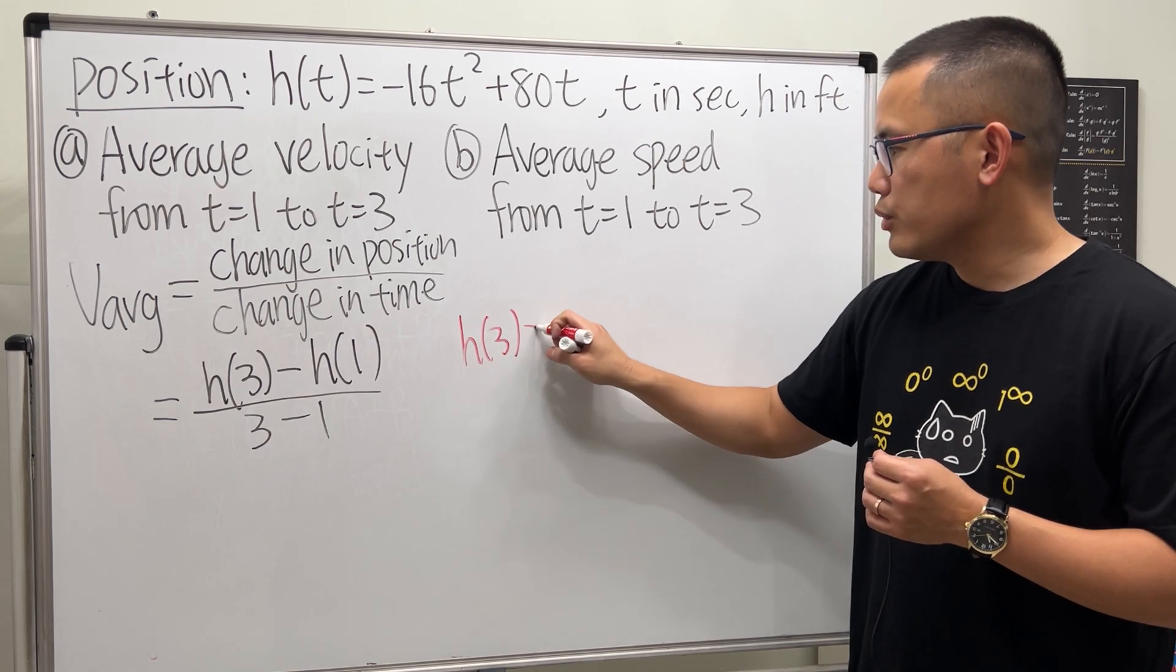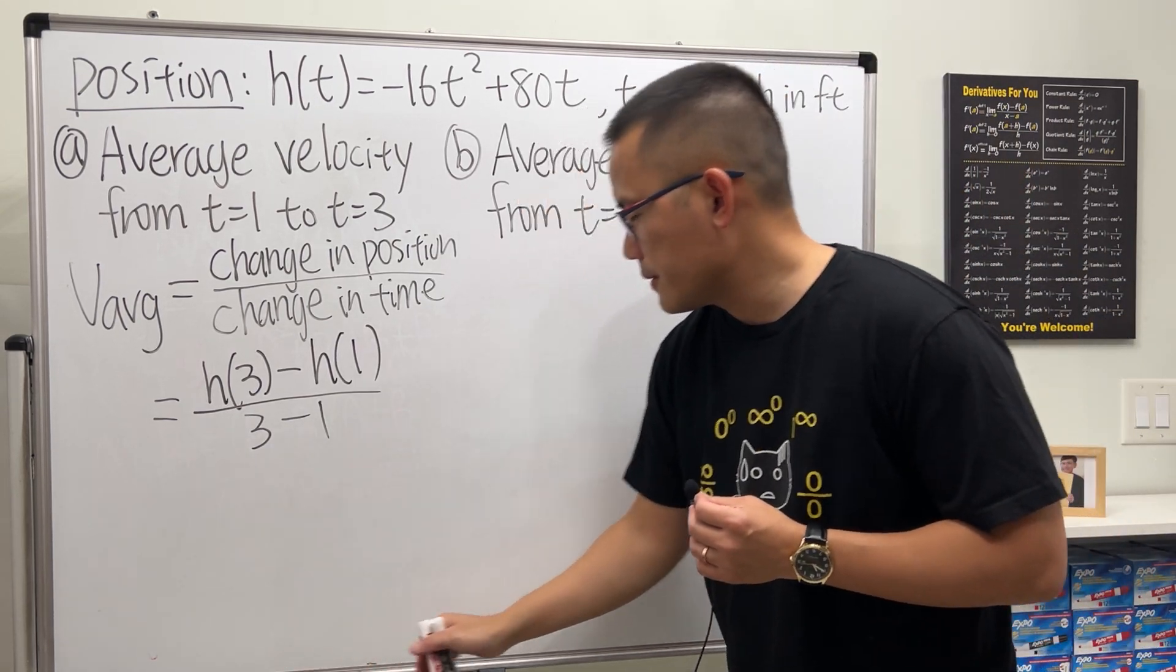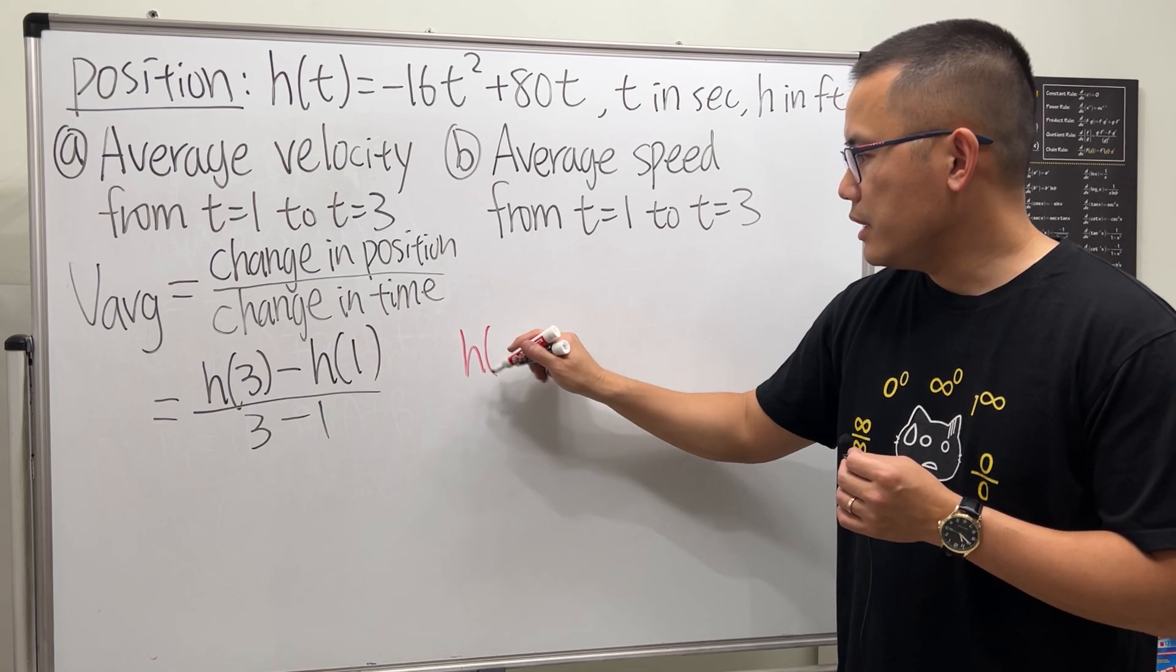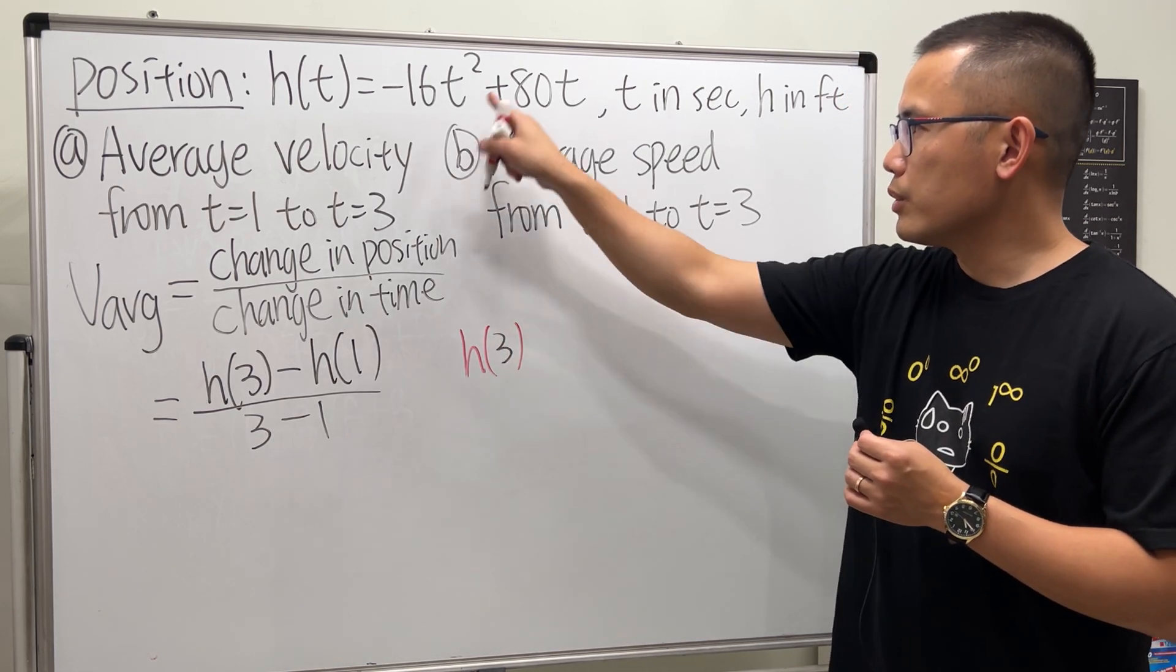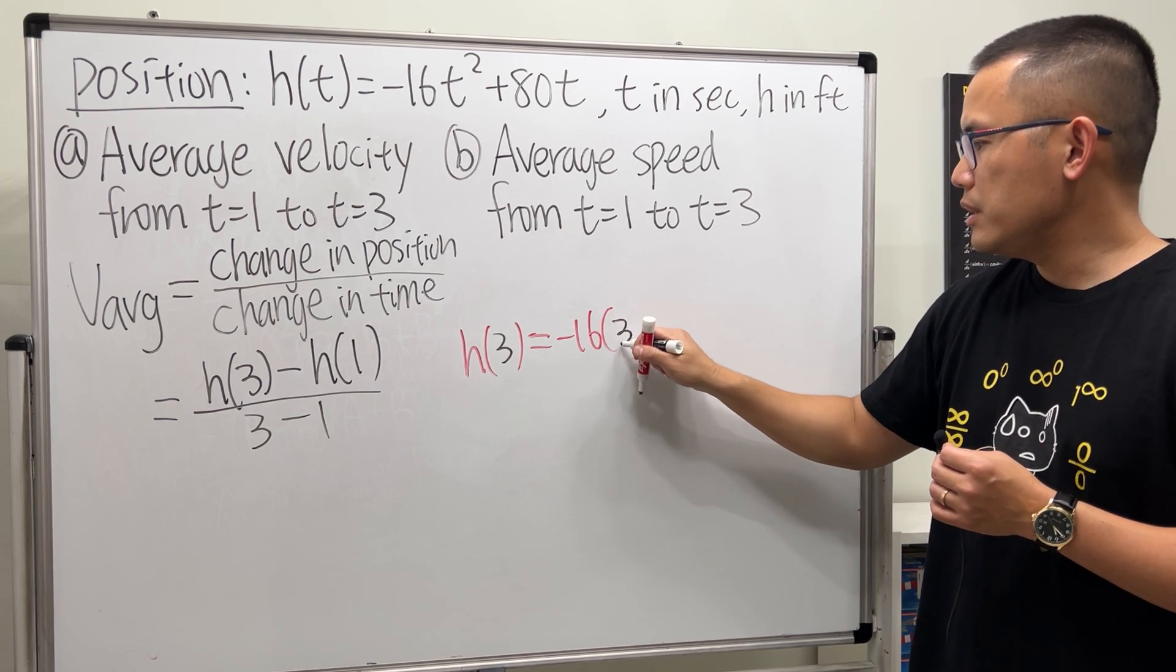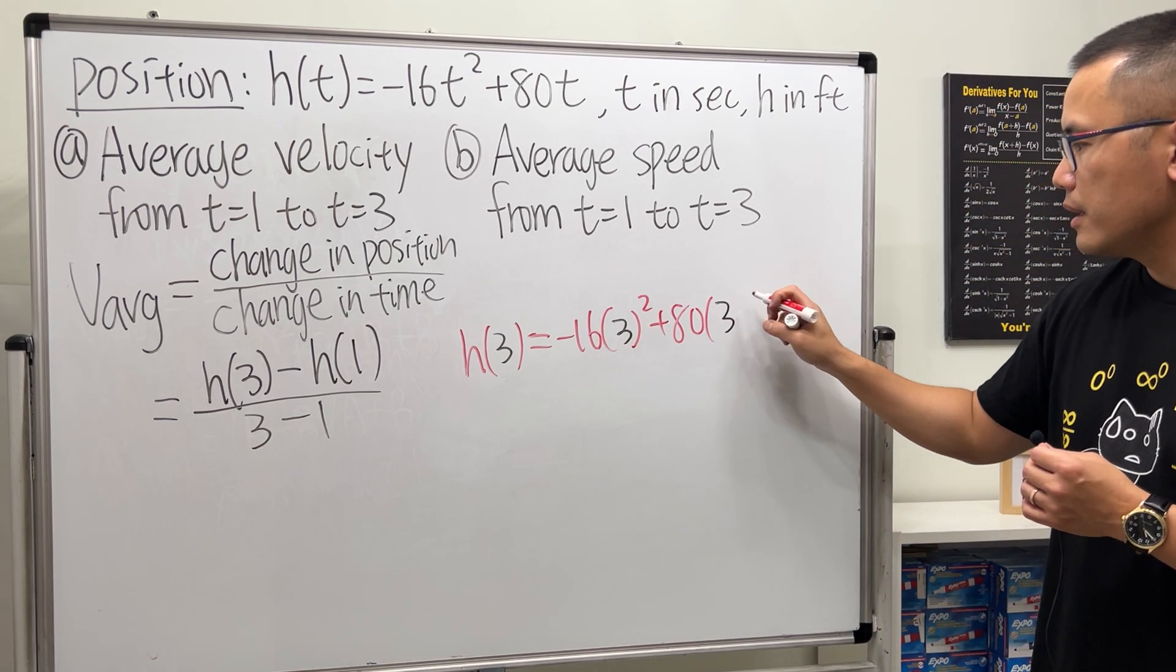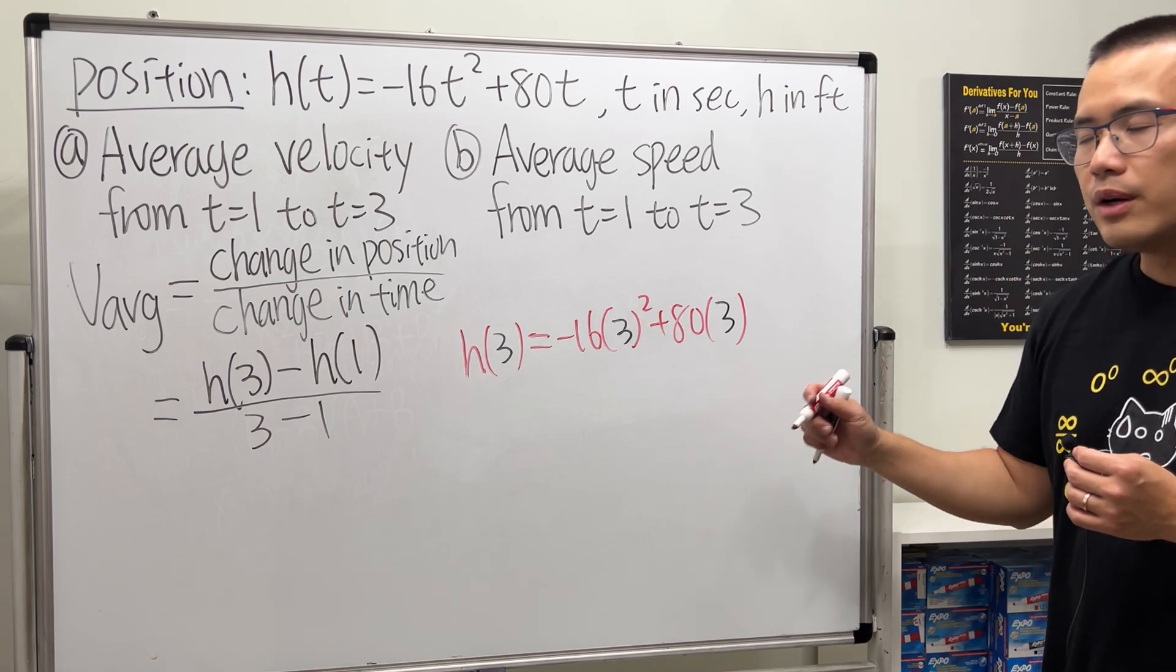For h(3), we will put 3 into all the t's, so we have negative 16 times 3 squared plus 80 times 3. If you work this out you will get 96.